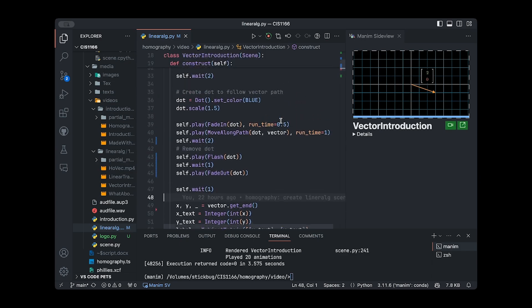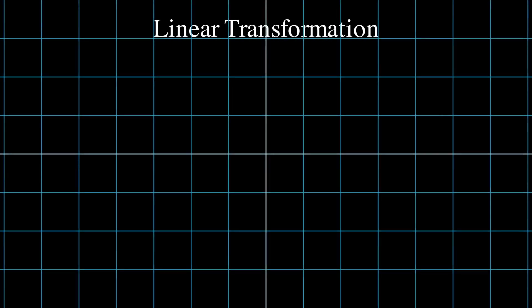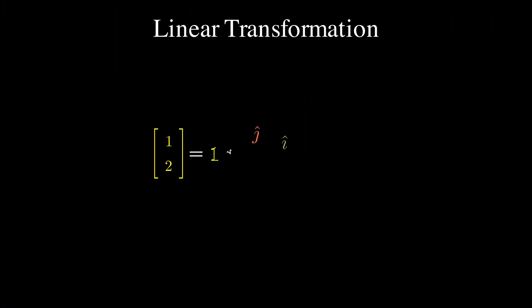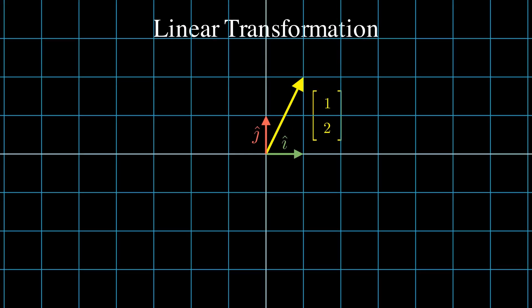Now, this vector by itself isn't all that interesting. What happens when we want to point it somewhere else? How would we tell software to move the vector to a new location? Well, we use something called a linear transformation. In order to get the new vector, all we need to do is multiply that vector by where i-hat and j-hat end up after a transformation. Consider the vector one, two — all this vector says is that it is one times i-hat plus two times j-hat, assuming i-hat is the vector one, zero and j-hat is the vector zero, one.